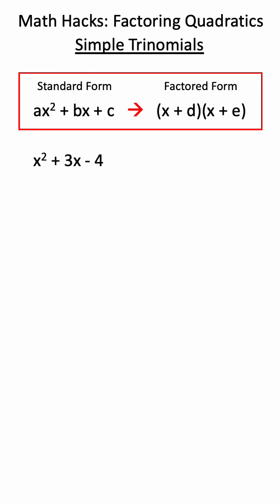To factor this simple trinomial, we want to find two numbers that multiply together to give us our c term, and these same two numbers will add together to give us our b term.